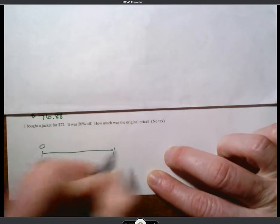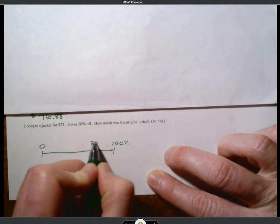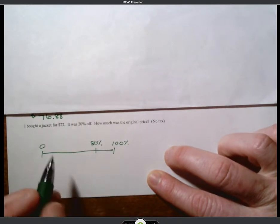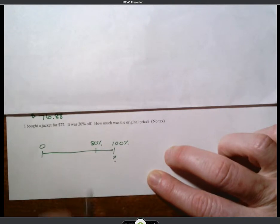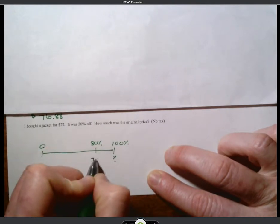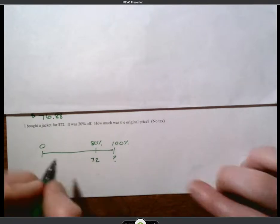Here's 0%. Here's 100%. 20% off is 80%. Okay? So we want to know what this number is, what the 100% was, when we know that 80% of the original cost was $72. Okay? So 80% is 72. So let's find out what 10% is.